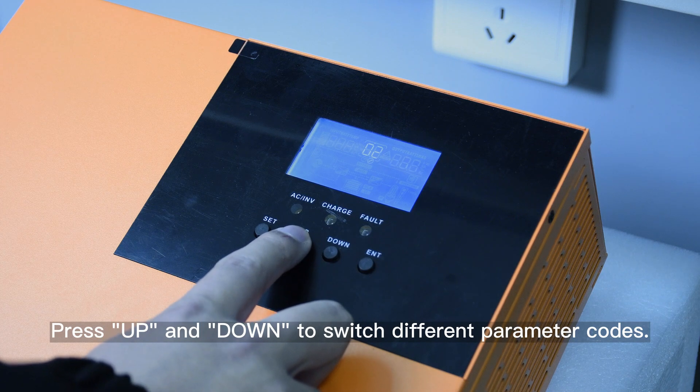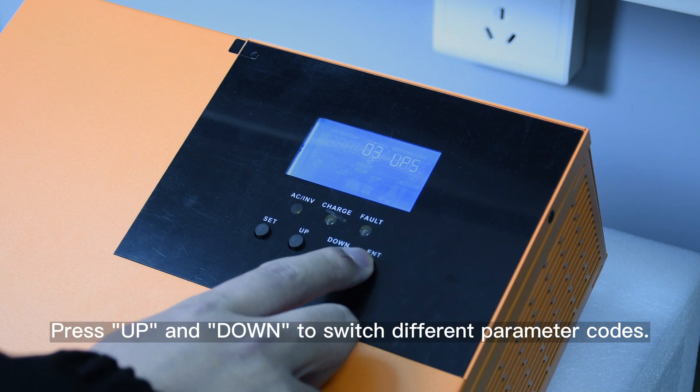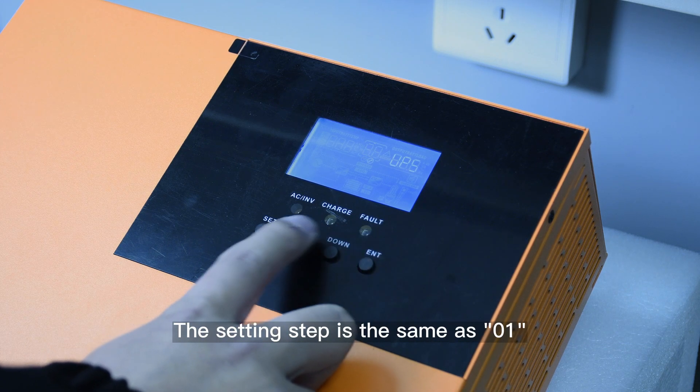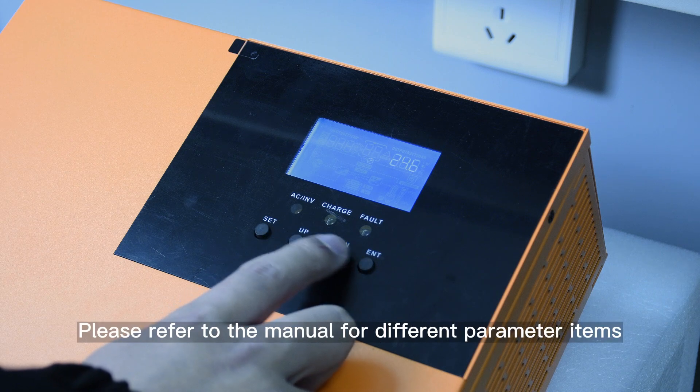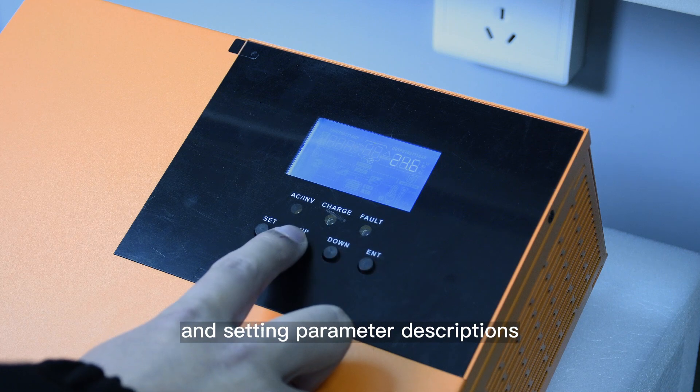Press UP and DOWN to switch different parameter codes. The setting step is the same as one. Please refer to the manual for different parameter items and setting parameter descriptions.